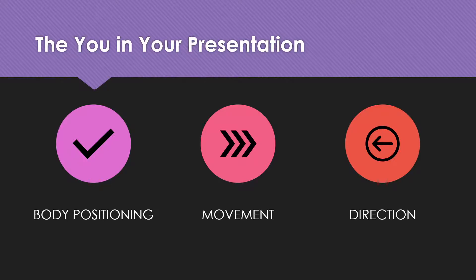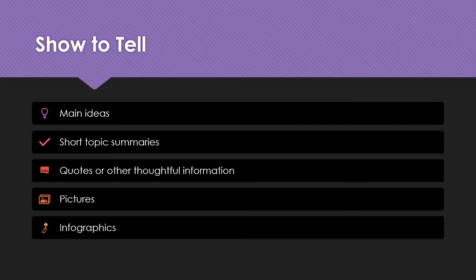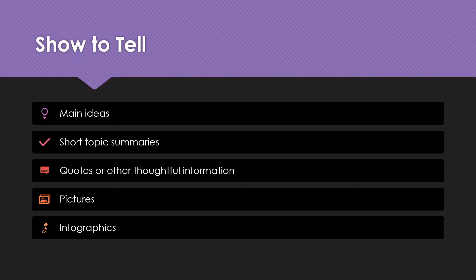Moving on, you should be showing your audience — not telling your audience — with your presentation. In this PowerPoint, as you can see so far, there are a lot of little bullet points. We're not covering paragraphs of information on the slide. I'm showing you what the topics are, and then I'm telling you with my voice what the details are. Your main ideas, short topic summaries, quotes or other thoughtful information, pictures, and infographics — these are all the types of things that you should be placing on your PowerPoint slides.